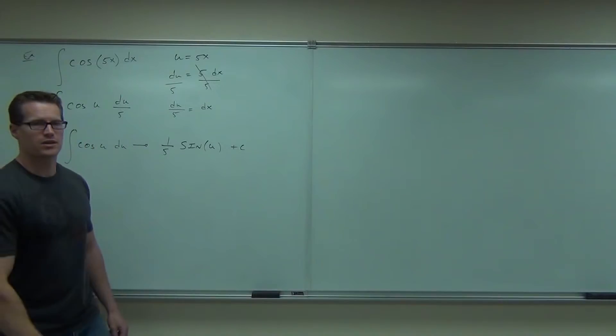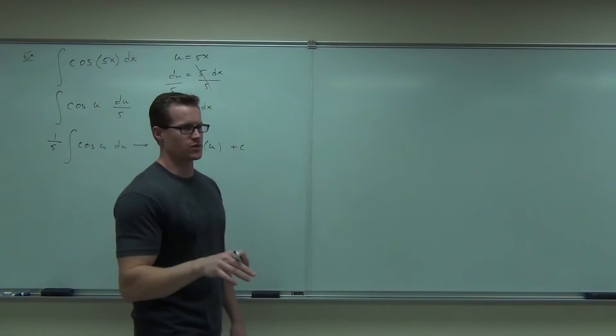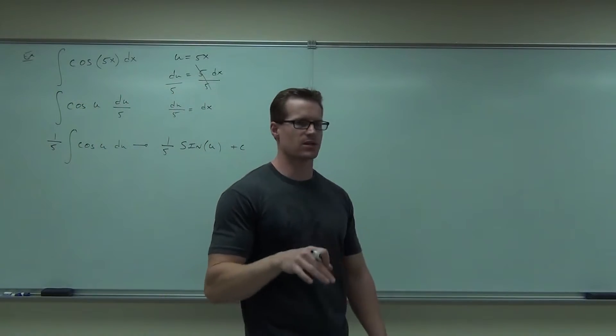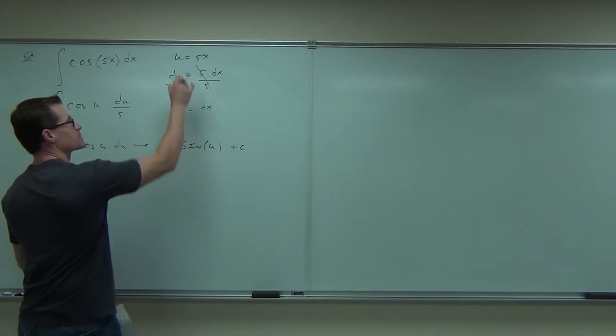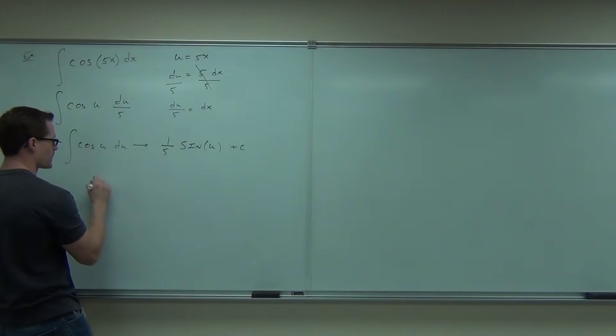Anyway, we're almost done. There's one more thing that we have to do. We didn't start in terms of u, so we can't leave it in terms of u. We're going to translate this back to x's using the same substitution you just made. So our answer, our integral, will be one-fifth sine of 5x.